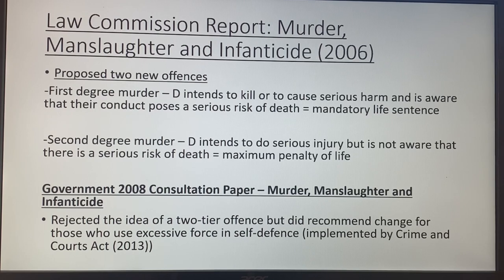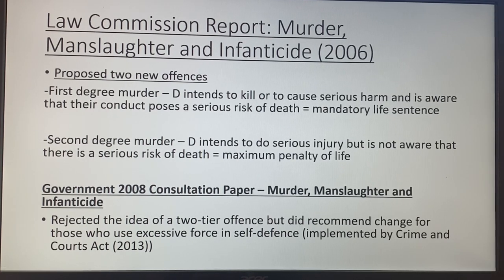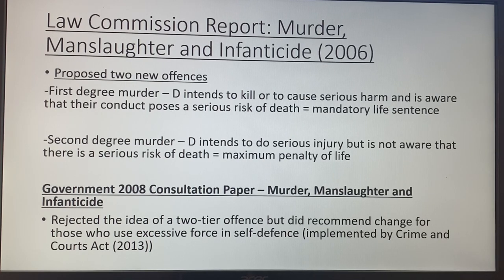The Law Commission report made reform proposals, suggesting two new offences: first degree murder and second degree murder. First degree murder is where the defendant intends to kill or cause serious harm and is aware their conduct poses a serious risk of death — this would carry a mandatory life sentence. Second degree murder is where D intends to do serious injury but is not aware of a serious risk of death — carrying a maximum discretionary life sentence. This would clearly set out the law and would be a huge improvement. However, in 2008 the government rejected it, though they did implement the Crime and Courts Act changes to self-defence, which was a positive step.